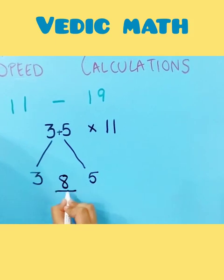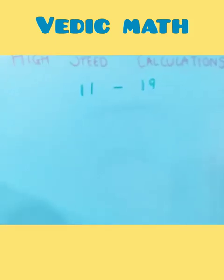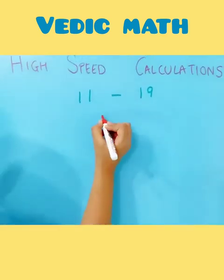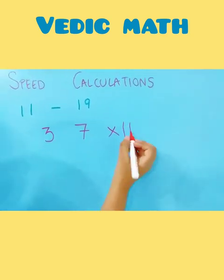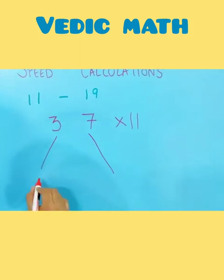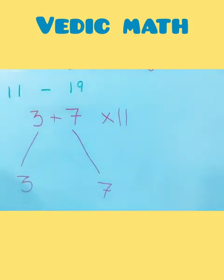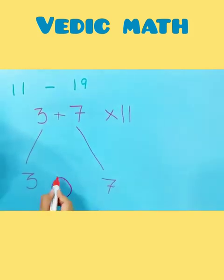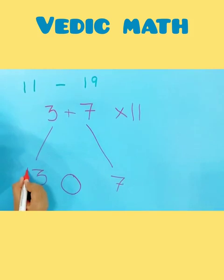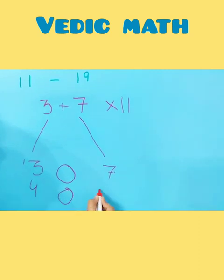So the answer of 35 × 11 becomes 385. Now let's take another example: 37 × 11. Separate the two numbers — 3 and 7 go on the corners. Now 3 plus 7 equals 10, which is a two-digit number. So the unit place of 10, which is 0, goes between 3 and 7, and 1 is carried over. So the answer becomes 407.